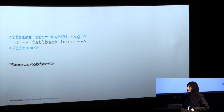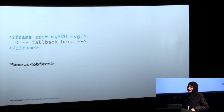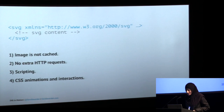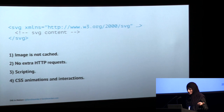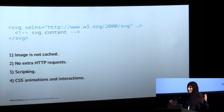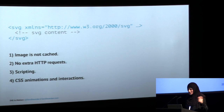Iframe is essentially the same as object with some minor differences. I prefer object over iframe. Inline SVG — the image is not cached unless you cache the page, there are no extra HTTP requests, but it can bloat the page if the SVG is large. I only use inline SVGs for simple icons.